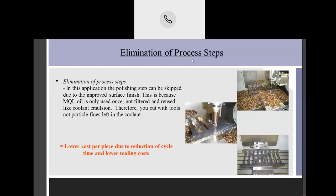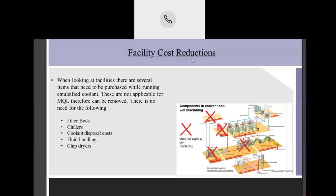When it comes to machining process steps, one of the areas where sometimes — based on the finishing — you have to polish: you do not have to do that with MQL. Again, they talk about lower cost per piece; these are the cycle time and lowering the tooling cost.